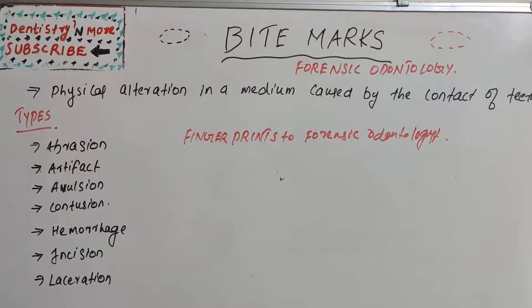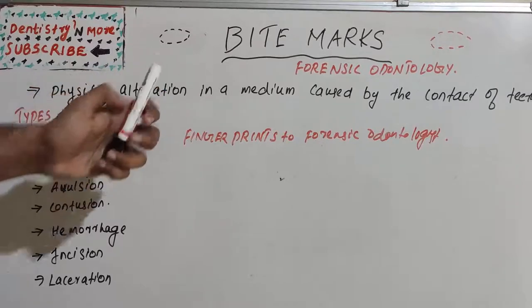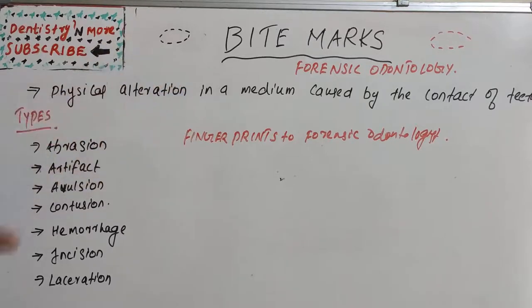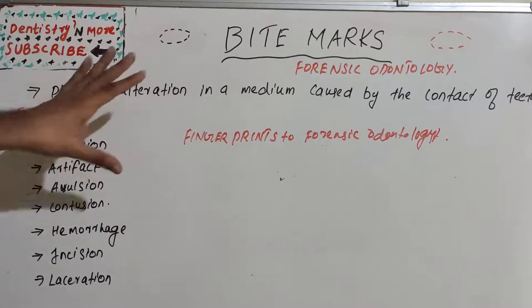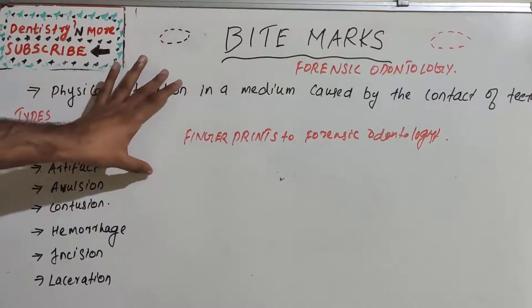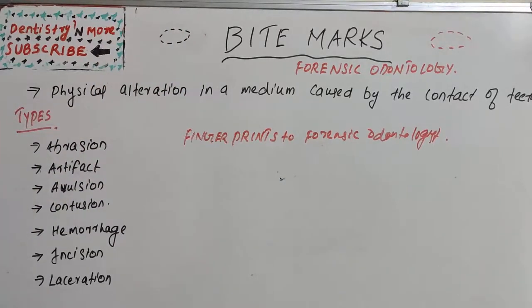Hello everyone, welcome back to another session in dentistry and more. Today we have a very interesting topic: bite marks in forensic odontology. Forensic odontology is a branch which deals with identification of a person or age estimation by analyzing bite marks or lip prints. From the pattern of teeth or the pattern of a bite, they can identify the person or reach a conclusion about the incident. This is a branch yet to be explored in detail, so let's learn about bite marks, the types, patterns, and their importance in forensic odontology.